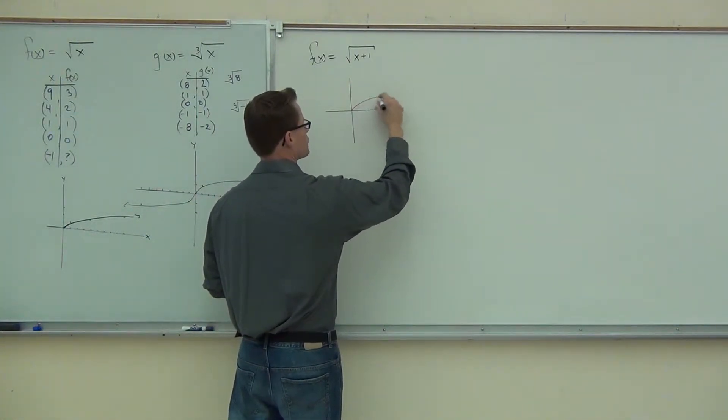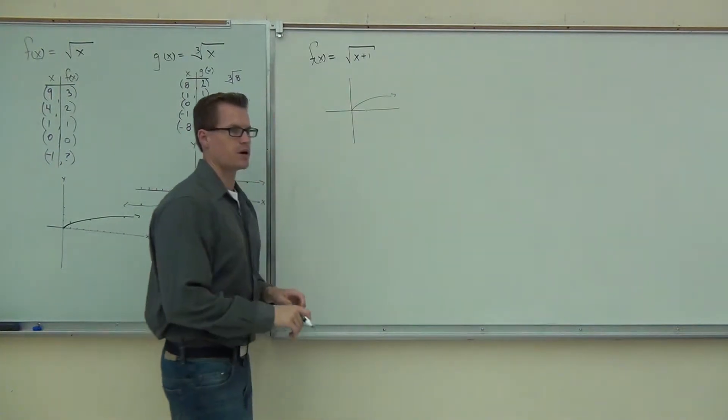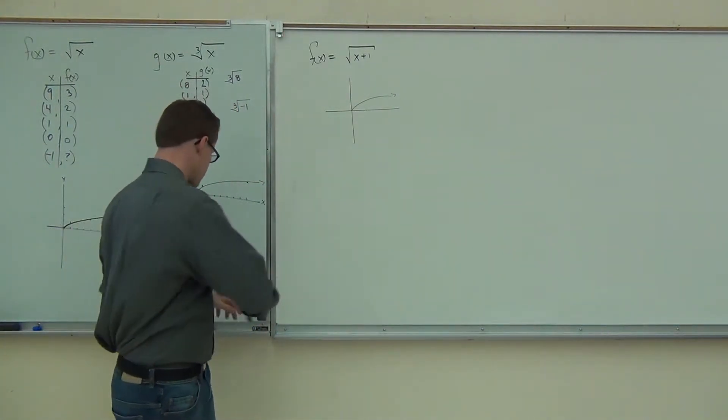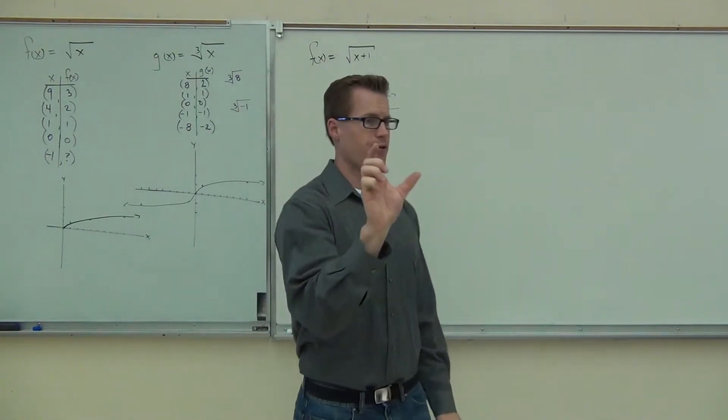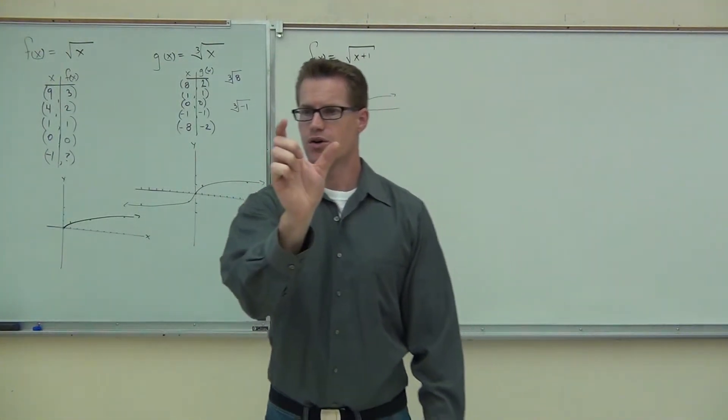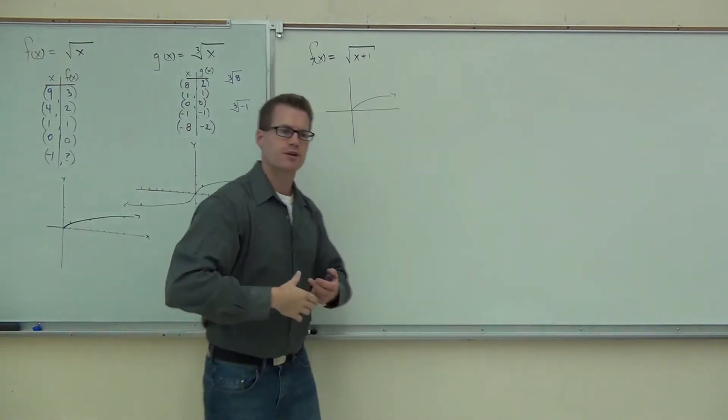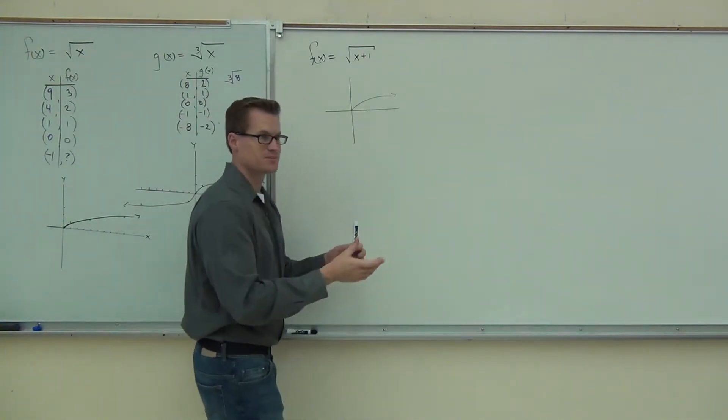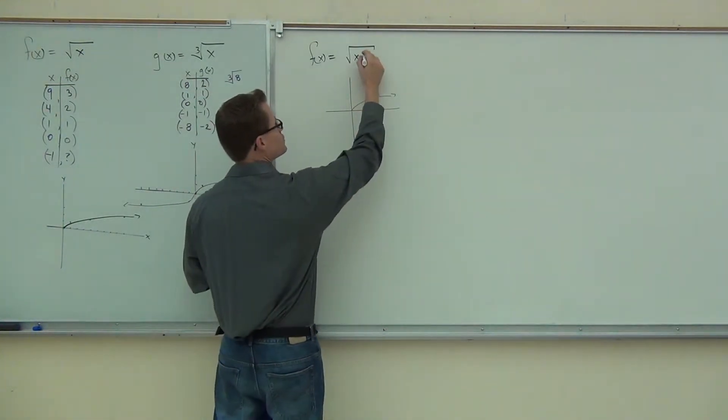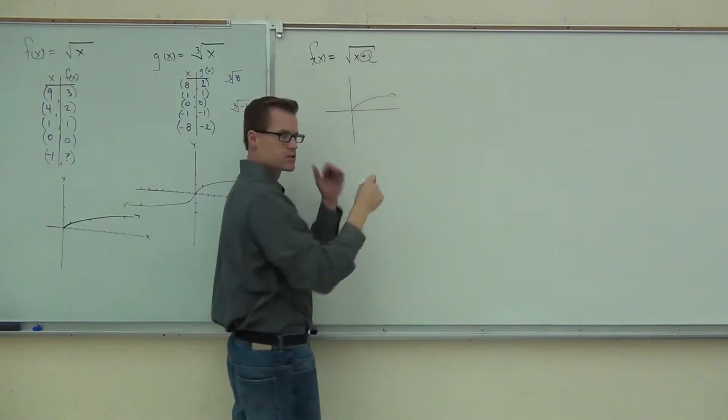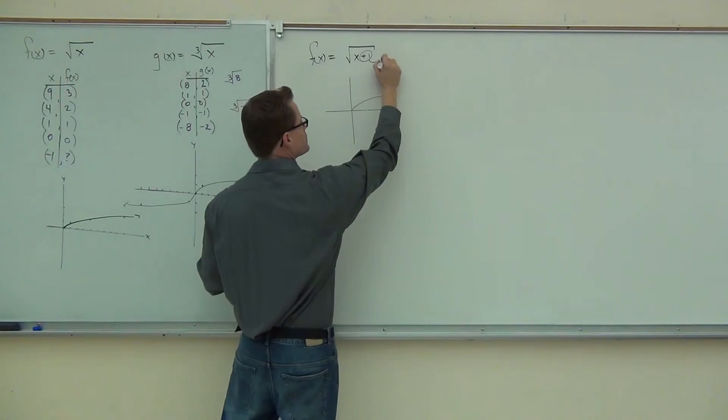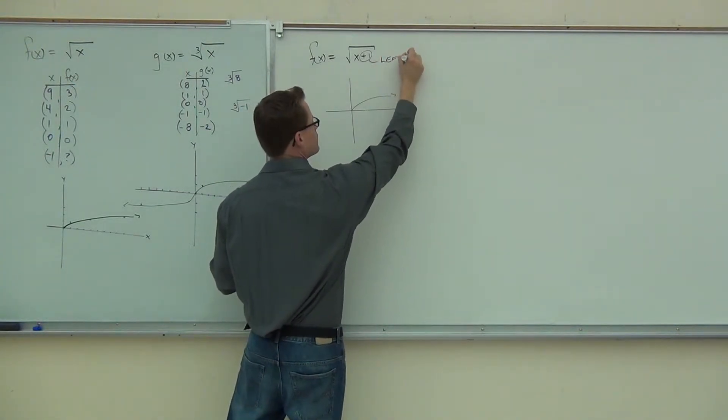Remember my original graph looks like this. My original graph looks like that. What did the plus 1 do if it's inside of your function? Was that a shift to the right or a shift to the left? Which one was that? The left. That's right. That's correct. So this is a shift to the left. If it's inside, it was horizontal and it was kind of backwards of what your head wanted to say. This was left 1.